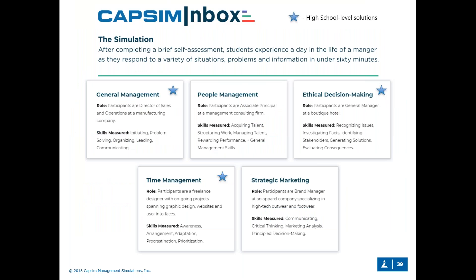Now let's talk about the different versions of Inbox. As it currently stands, we have five different versions. Due to the Inbox platform, we've been able to create a variety of different scenarios relating to specific skills and competencies or specific career fields for students. The one we've been primarily discussing today is General Management, but we also have People Management — a more HR-focused version — Ethical Decision-Making, Time Management, and Strategic Marketing versions, with General Management, Time Management, and Ethical Decision-Making being most relevant for high school students.